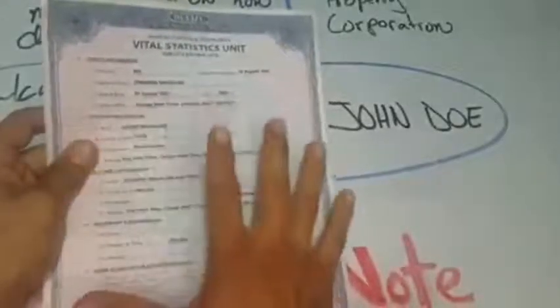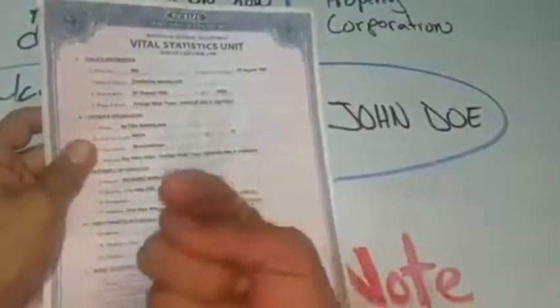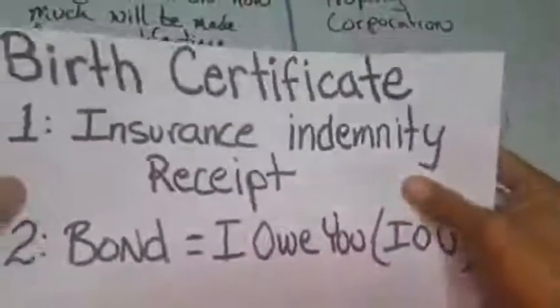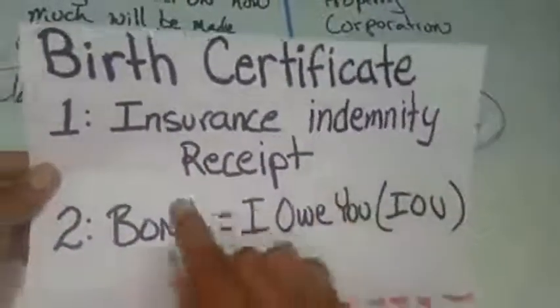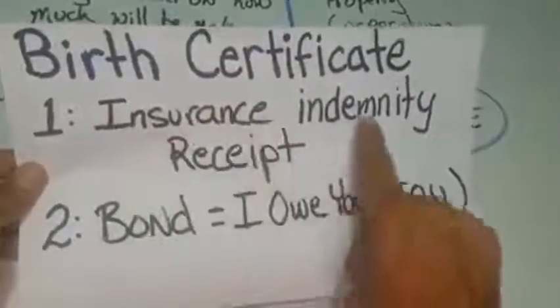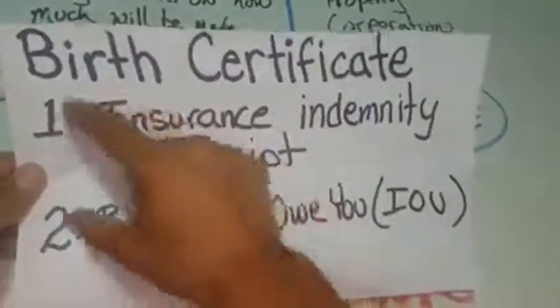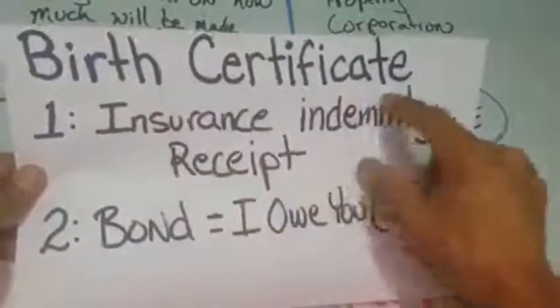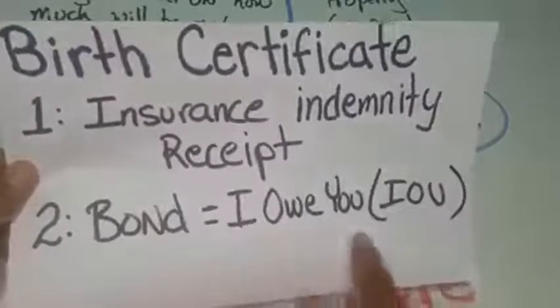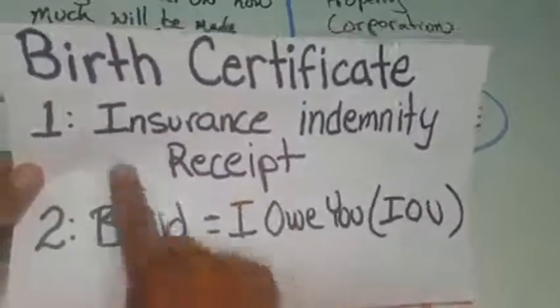I want to share something with you about this document — the birth certificate. I learned some information directly from a judge, and what she said basically opened my eyes. She said that the birth certificate is basically an insurance indemnity receipt — an insurance receipt. Interesting. And it's also a bond, which is an IOU.